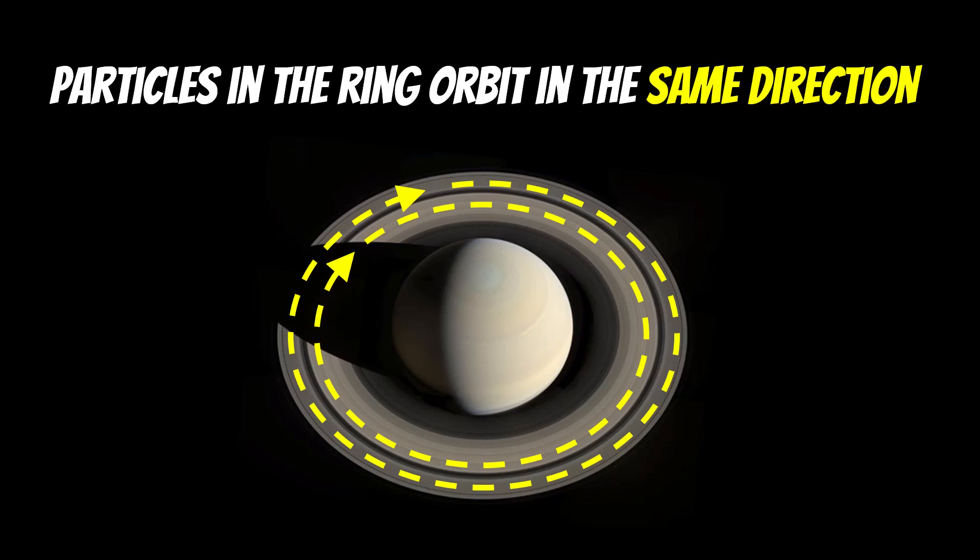They're orbiting quite fast, so you're talking tens of kilometers per second. Think of it as traffic on a road that's all going in the same direction. The cars are all going in the same direction, so their relative movement to one another is not that great, even though they're going around quite fast.